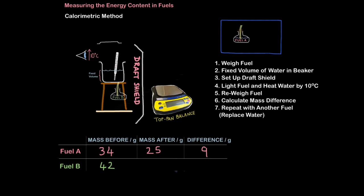Then I take fuel B, I place it under the beaker and I light it. And once again I weigh and observe for a 10 degree rise in temperature. When this happens I blow out the flame and I re-weigh the fuel. And this time the fuel has 37 grams of mass left, so in other words the difference is 5 grams.